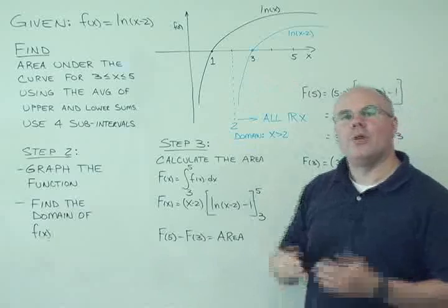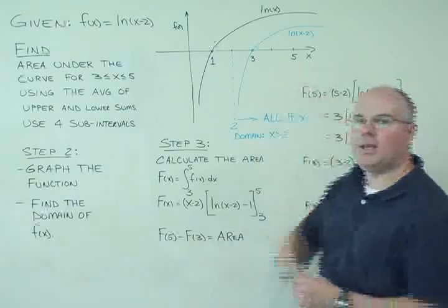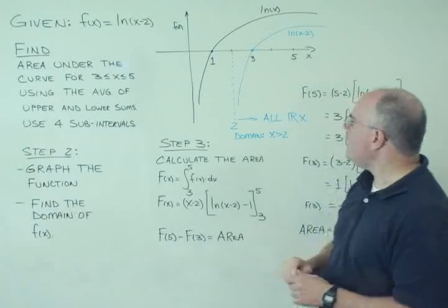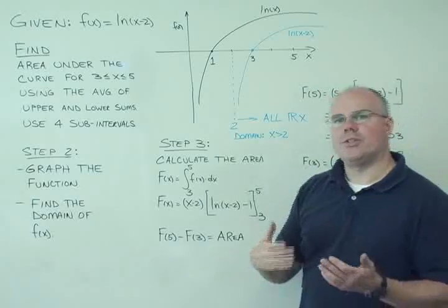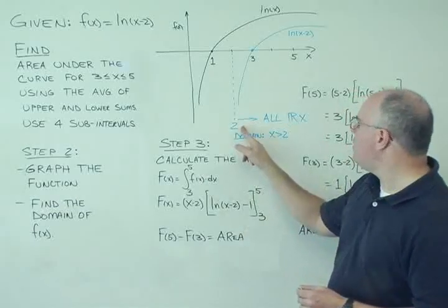And then I can draw in my curve for ln(x-2). So I have a good idea of what we're looking at. We're trying to find the area between x equals 3 and x equals 5, inclusively. And the domain for this function, those values of x where this is valid, is all positive real numbers greater than 2.